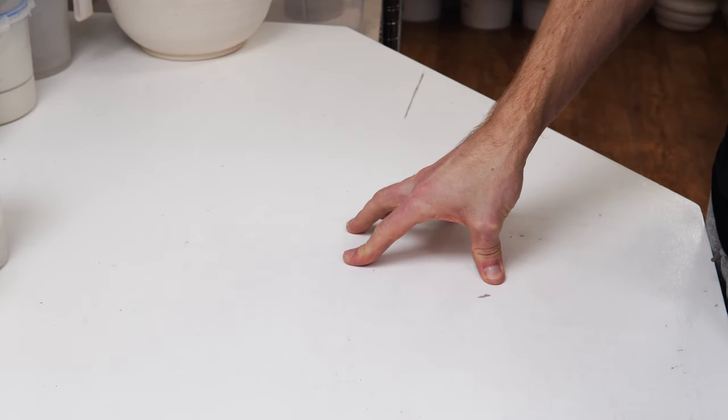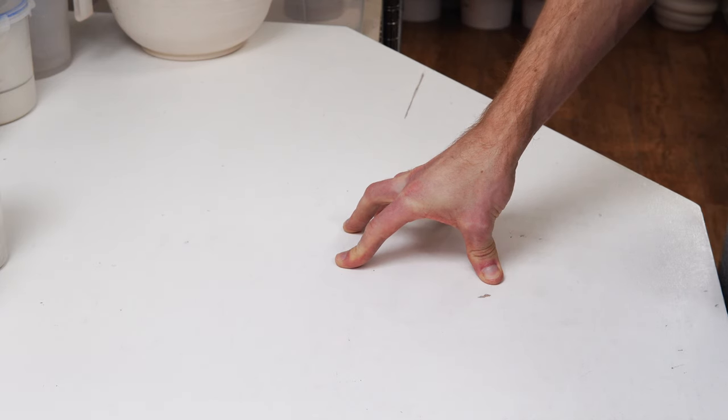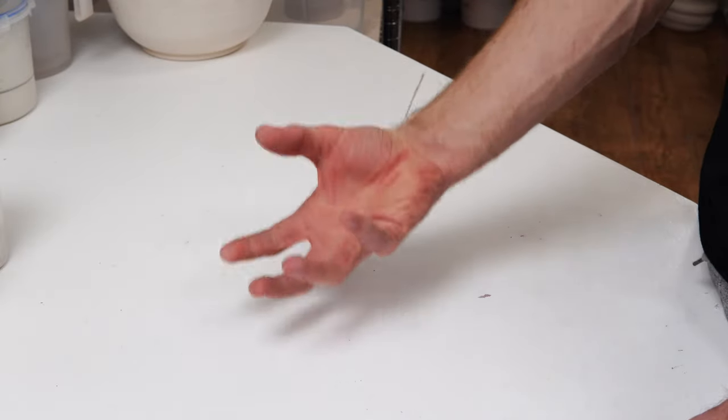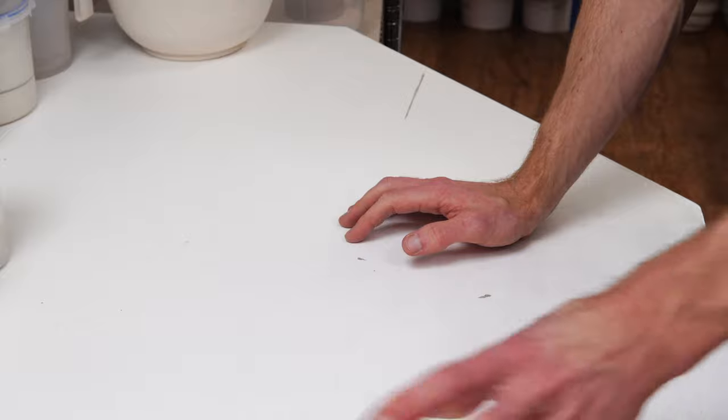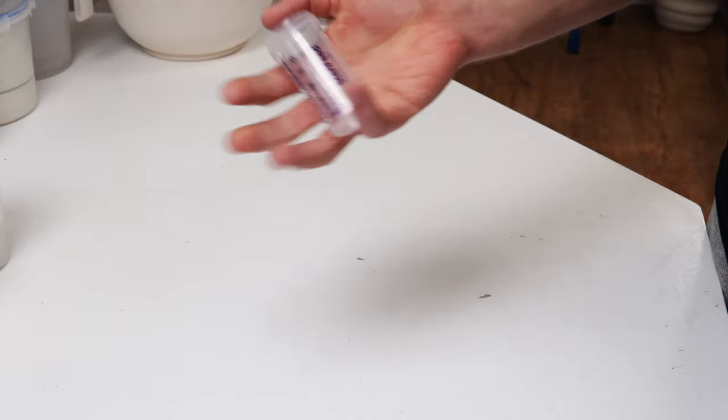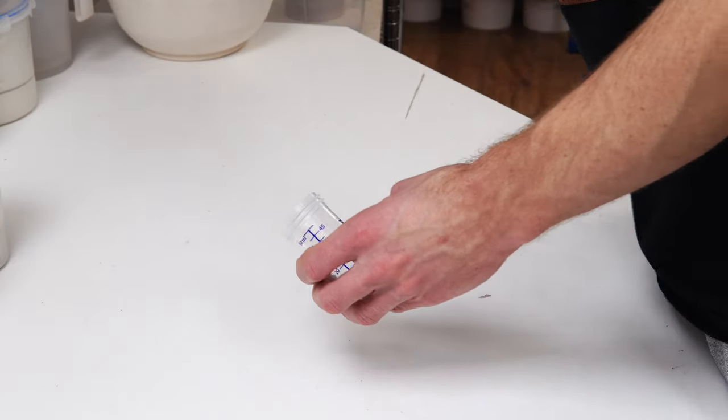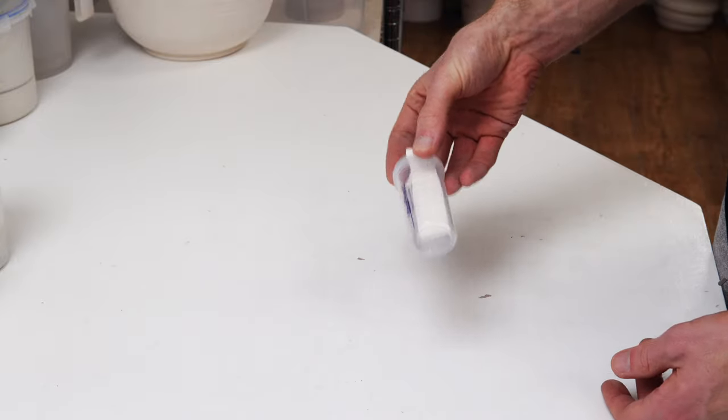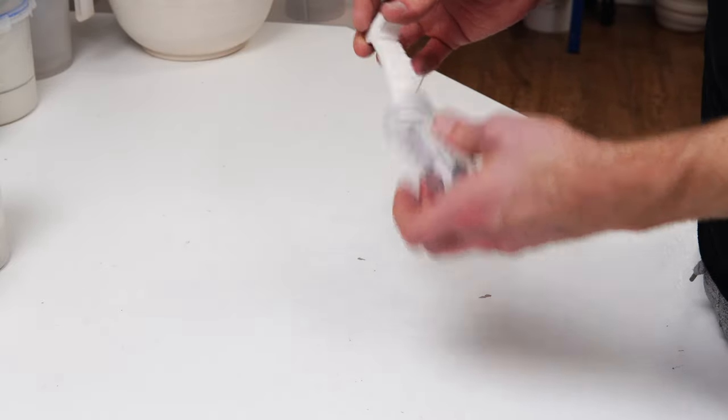The thing with these is to do 15 glazes would be a really laborious test, and to do 15 glazes at once would require a decent amount of glaze if you're going to dip them. These SteriFeed bottles are great because the test tiles fit perfectly. I can in 50ml of liquid dip a whole test tile.